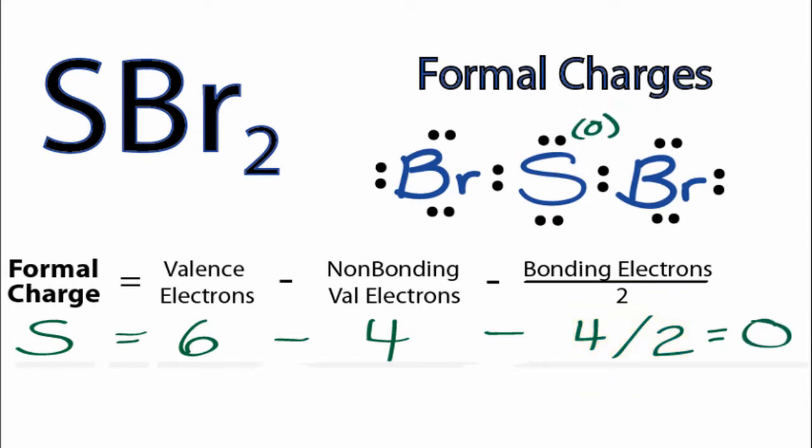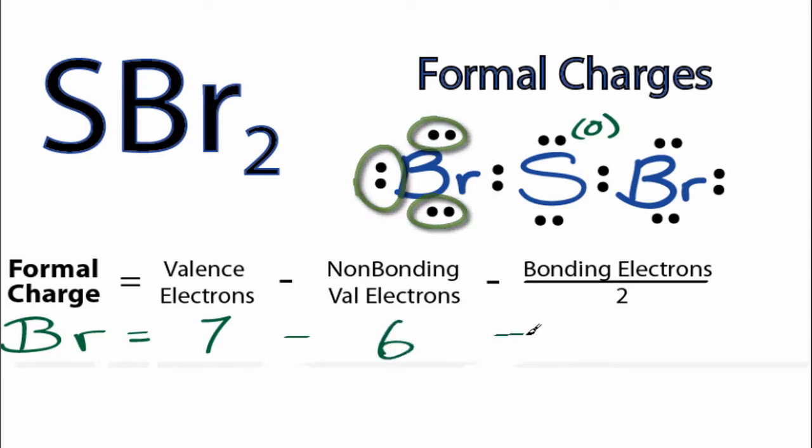Next we'll take a look at the bromine atom. Actually both bromines are symmetrical, so we only need to do one. Bromine is in period 7, or 17 on the periodic table. Then we'll subtract non-bonding valence electrons. Bromine has 6 non-bonding valence electrons, and then bonding, we have 2, which we'll divide by 2. So 7 minus 6 minus 1 is 0. So the formal charge on the bromines, each of them, is 0.